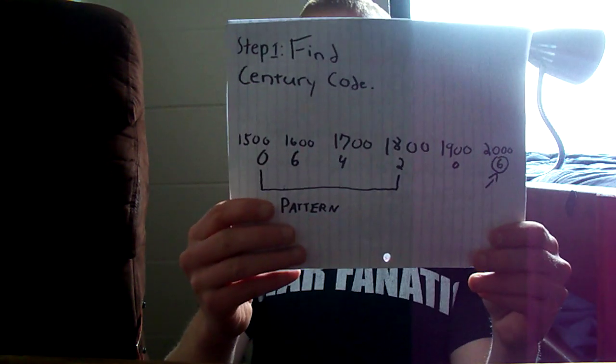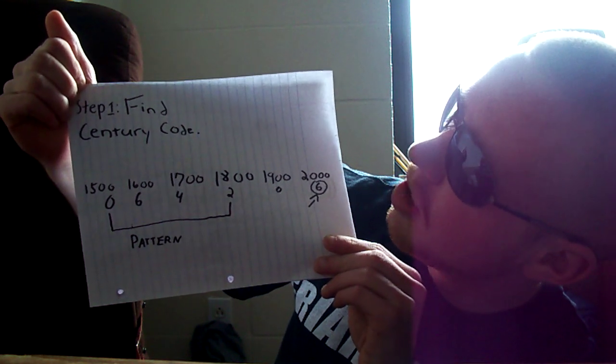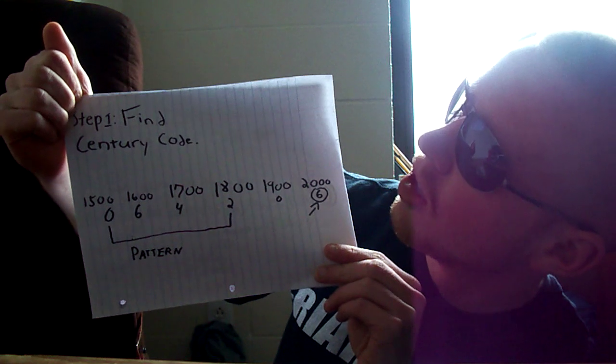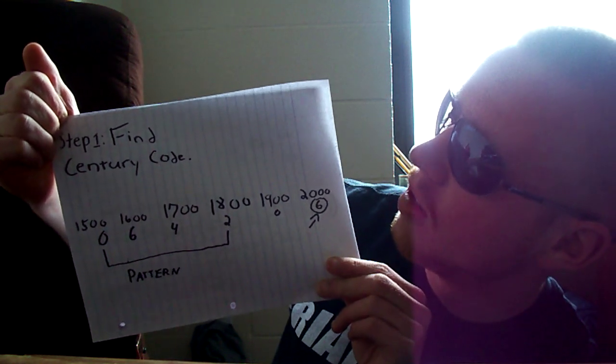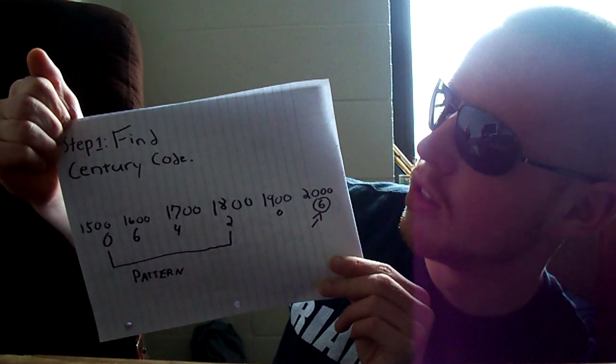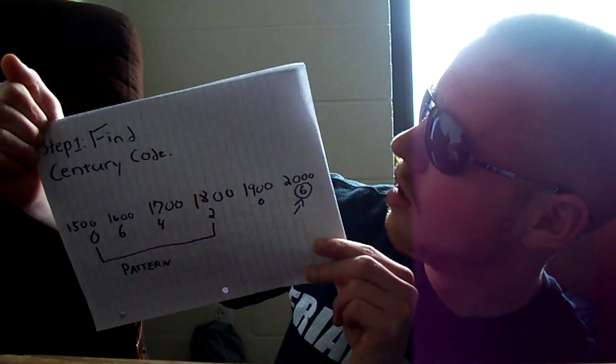Which day of the week is this? We're about to find out. Okay, step one: you're going to find something called the century code. You can see how it's either 0, 6, 4, or 2, and it repeats itself going backwards in increments of two. It's just a simple pattern that the years follow and you can easily find this. So the century code for the century of 2000 would just be 6. Simple.